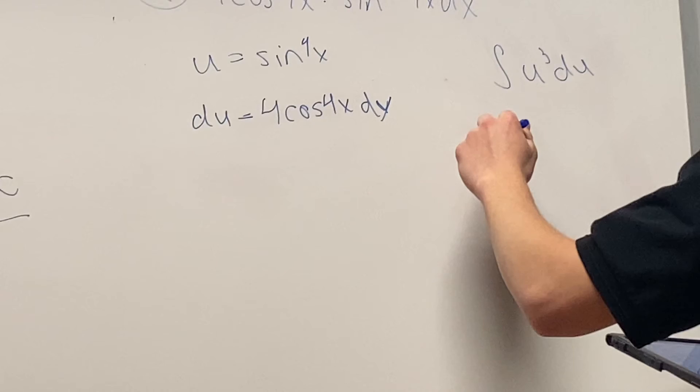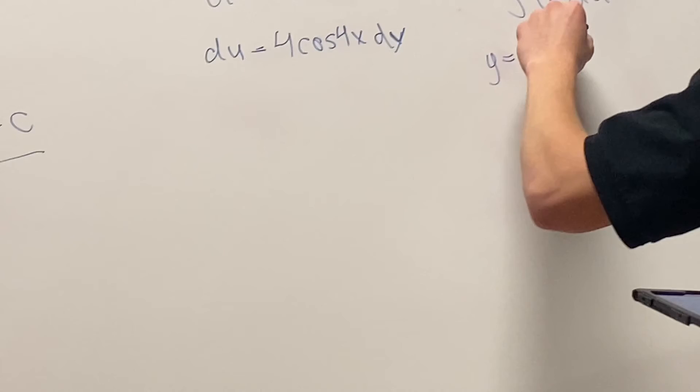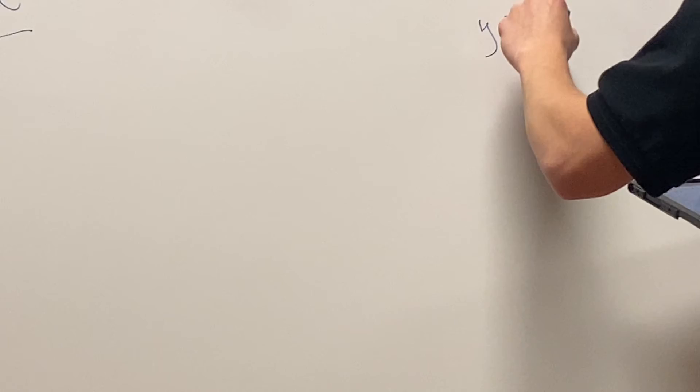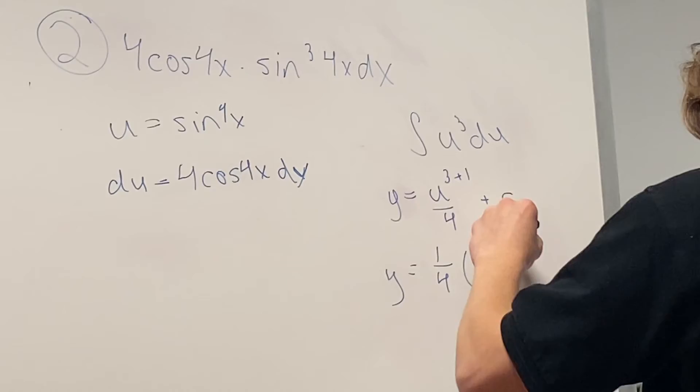Then it's going to be y equals u, 3 plus 1 as exponent, under 4 plus c. Perfect. You're almost there. And then to wrap it all up, got y equals 1 fourth, parentheses sine 4x to the fourth plus c. Perfect, you are one intelligent student.